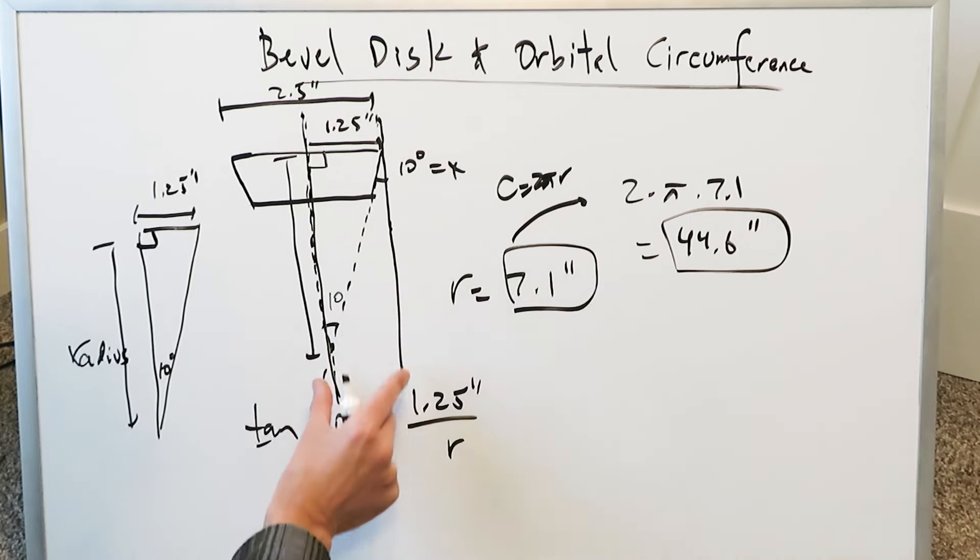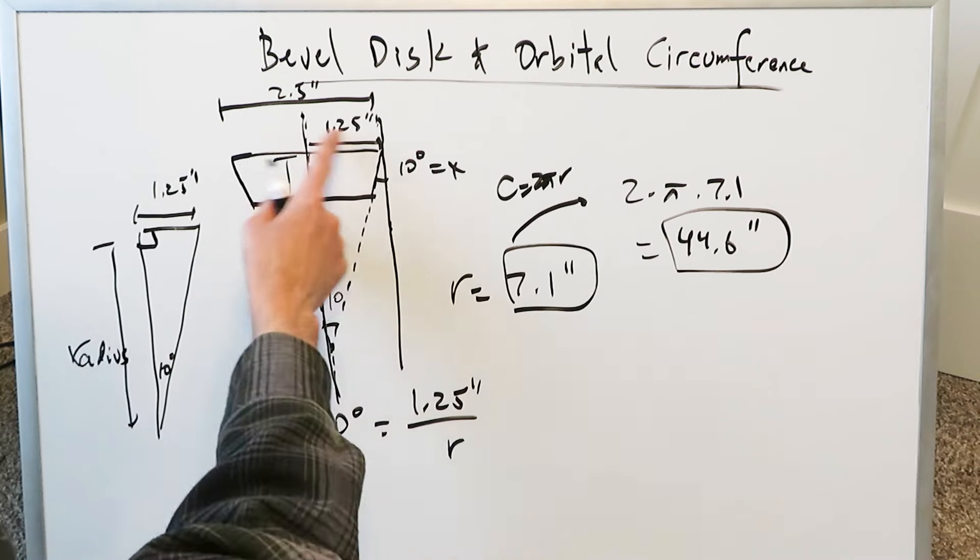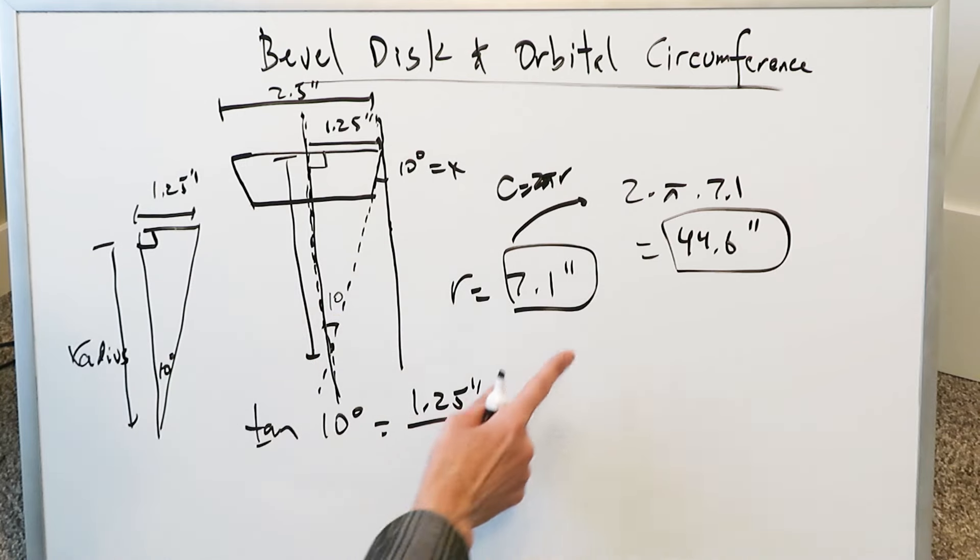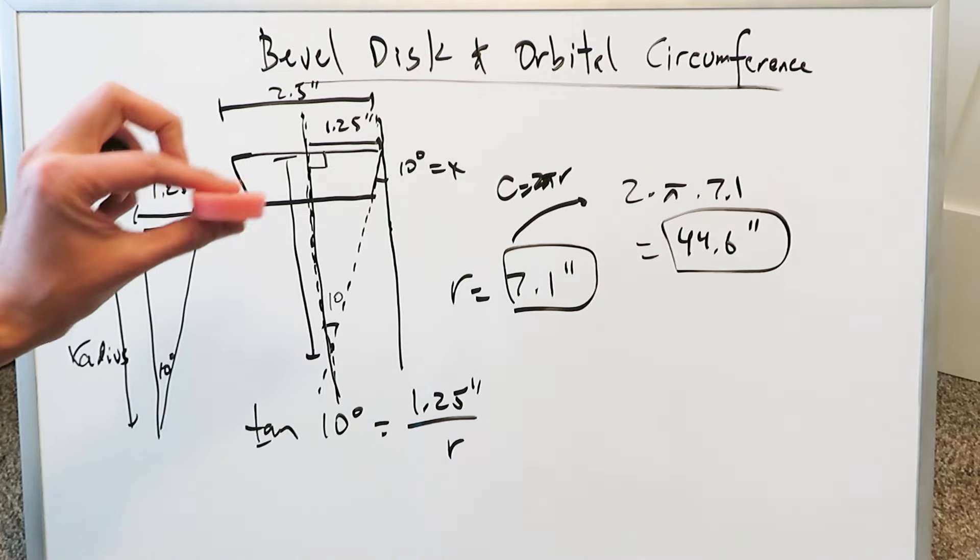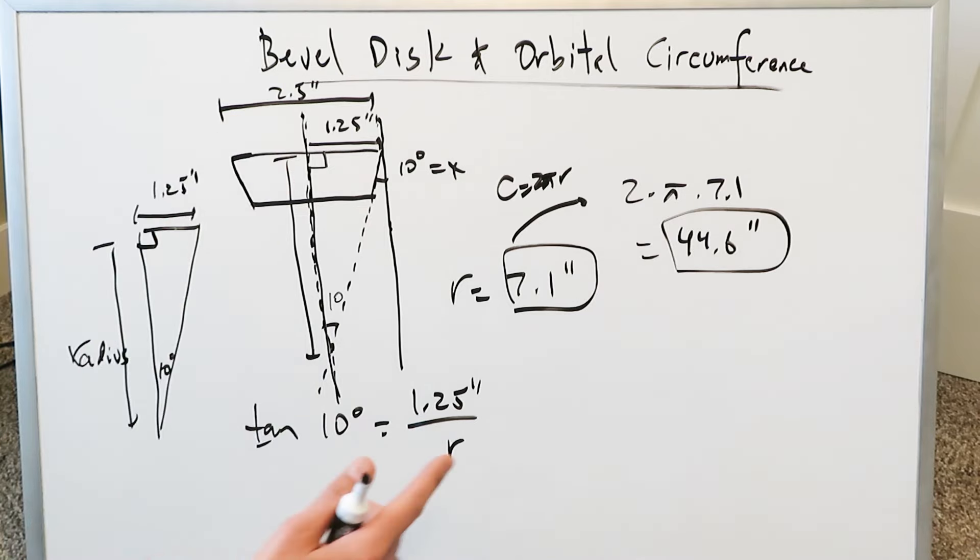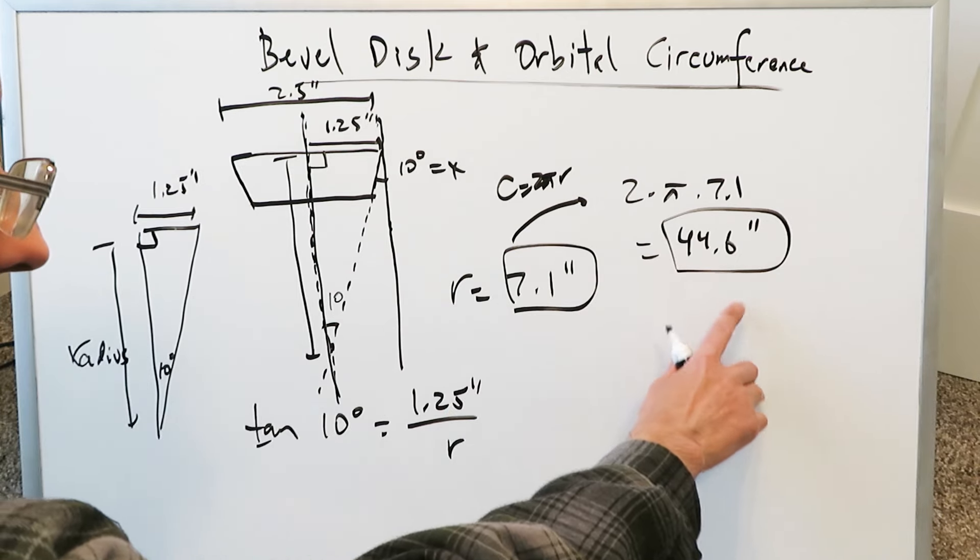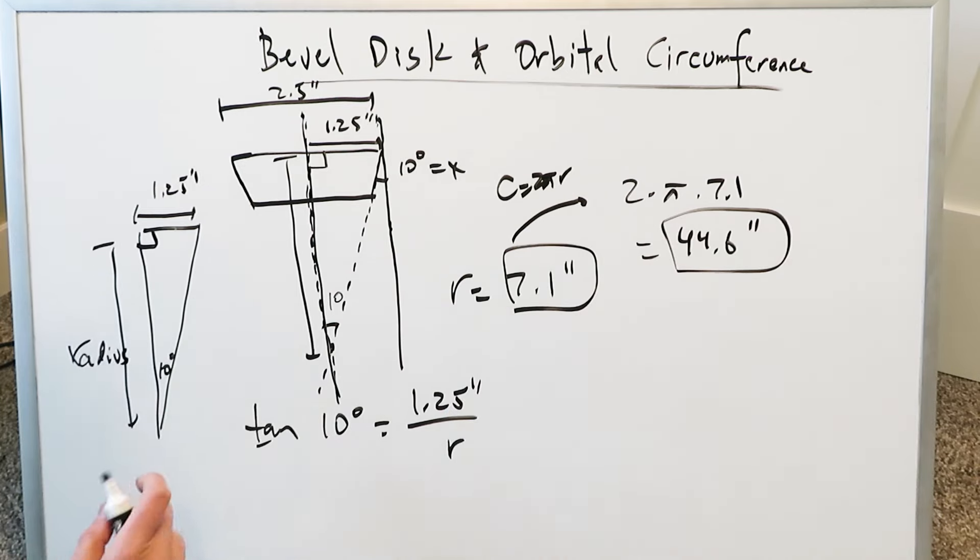Look at everything here in terms of two parallel lines with a transversal. Do your trigonometry, the tangent function, and you get your answer right there. And that exactly is what it is. This specific disc with a small angle of 10 degrees has a pretty large radius in terms of the orbital path and a pretty large orbital circumference, 44.6 inches.